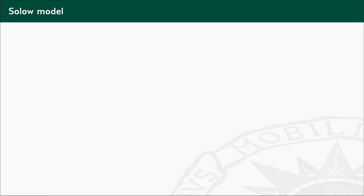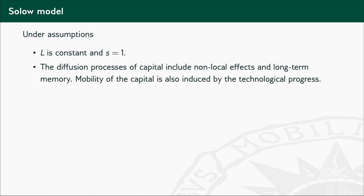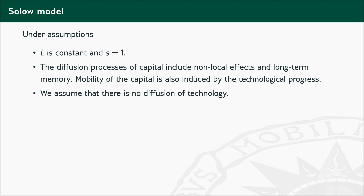In this talk, we work under the following assumptions. First, L is assumed to be constant and S equals 1. The diffusion processes of capital include non-local effects and long-term memory. The mobility of capital is induced by technological progress, in the sense that capital is able to move from regions with lower technological progress towards regions with higher technological progress. Finally, we assume that there is no diffusion of technology.